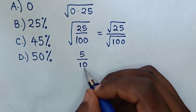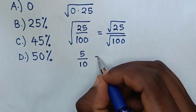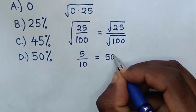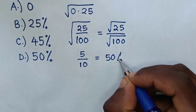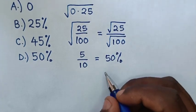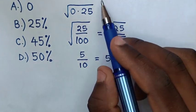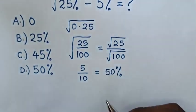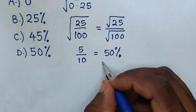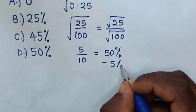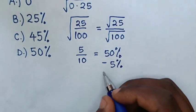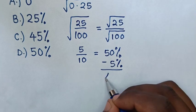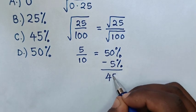Now, 5 over 10 is equal to 50%. Then, from our original expression, it was minus 5%, so 50% minus 5% is equal to 45%.